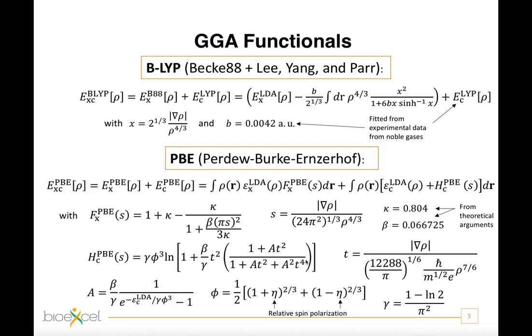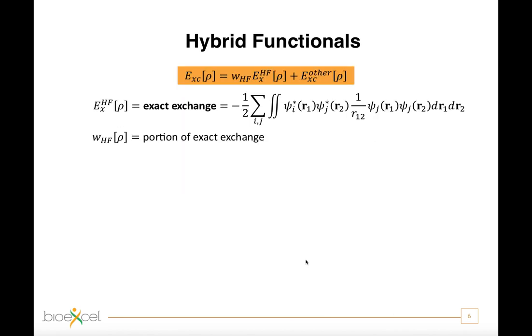Historically, one of the first ways to go beyond the generalized gradient approximation brought to the development of the so-called hybrid functionals. These are a class of approximation to the exchange-correlation energy functional that incorporates a portion of the exact exchange from Hartree-Fock theory.